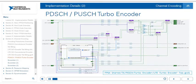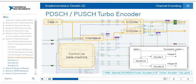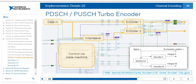The PDSCH and PUSCH turbo encoder implementation in the LTE application framework uses the same turbo encoder block for both the downlink and uplink shared channels. Referring to the block diagram per the LTE standard, the data comes in on the left, with control via state machine on the bottom left and our interleaver, and then encoder 1 and encoder 2 with outputs. The diagram is more difficult to read because pipelining has been implemented to ensure timing is met on the FPGA, but focusing on the key blocks reveals the implementation clearly.